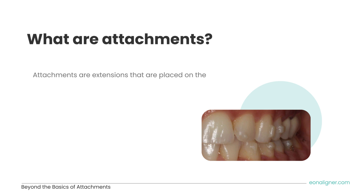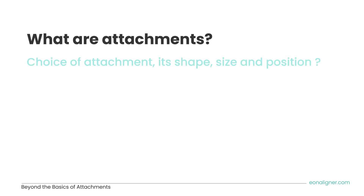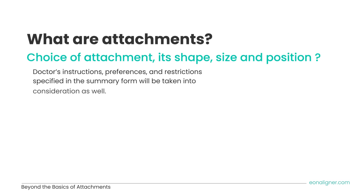Attachments are extensions placed on the tooth surface to aid the aligners in difficult movements. They are made of composite material and are placed by the practitioner at the beginning of treatment using special templates provided by EON. The choice of attachment — its shape, size, and position on the tooth — will be customized for each case according to the intended movement.